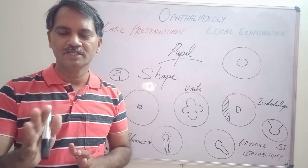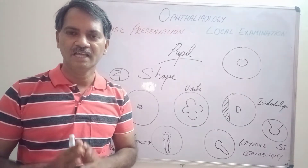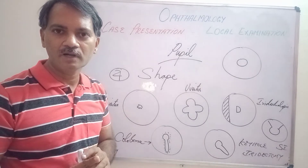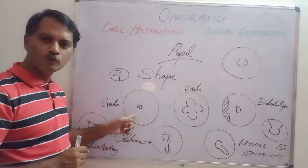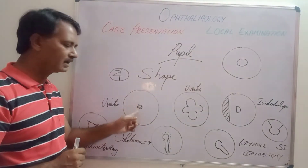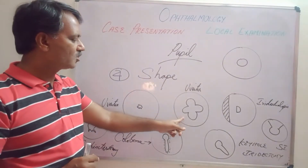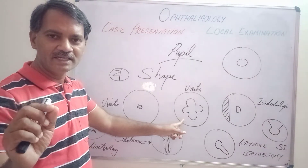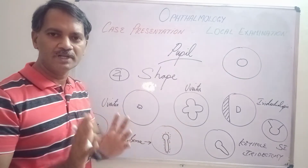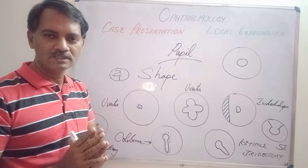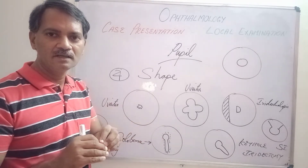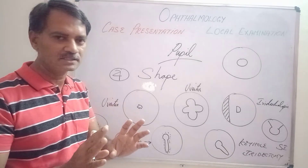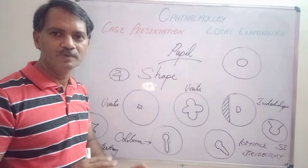The next important aspect of pupil examination is its shape. Normally the pupil is circular or round. In anterior uveitis or iridocyclitis, the pupil is small and irregular — this is called festooning of the pupil, meaning irregular dilatation. This occurs due to ring synechiae, which is attachment of the pupillary margin to the anterior capsule. Some portions may be tightly attached and some loosely; the loosely attached portions dilate with cycloplegics or mydriatics, while the tightly attached portions remain, leading to an irregularly dilated pupil — festooning.